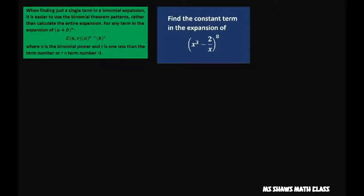We're using this formula here. Of course in your calculator, that's n choose r. So I'm going to expand this where my n equals 8, my a equals x cubed, and my b is going to be negative 2x to the negative 1.